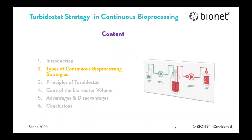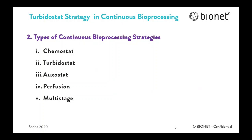Now I will explain briefly the different types of continuous bioprocessing strategies. There are three main types of continuous cultures: chemostat, turbidostat, and oxostat. Besides these main strategies, we can find variations of these modes according to special requirements of the process, like perfusion with cell recycling and multi-stage when different phases of growth are required.